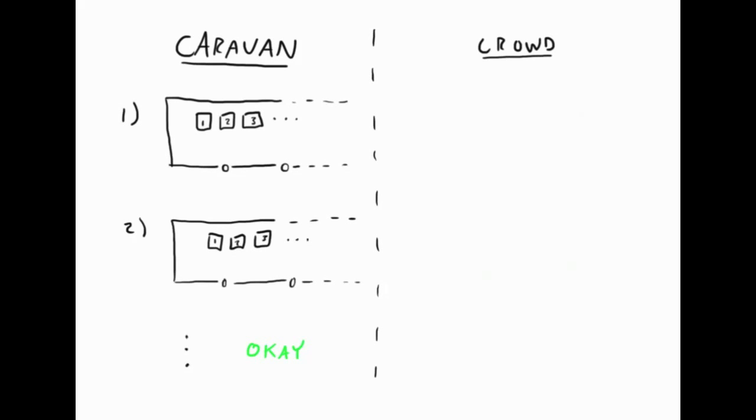On the other hand, if an infinite crowd of people showed up, one person for every real number, like all the fractions, negative numbers, and the irrational numbers like pi, we could not find space for all of them, no matter how hard we try.